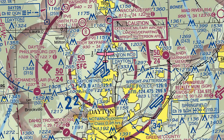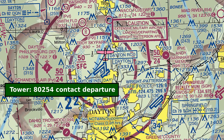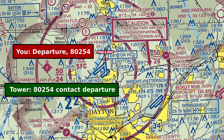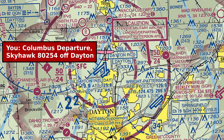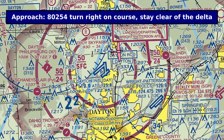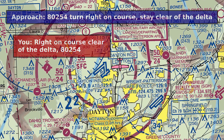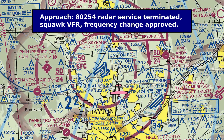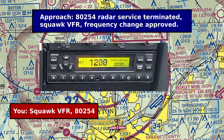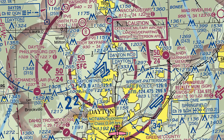On the way back out, the tower is going to say contact departure. When that happens, you use the same frequency that you used to get in, unless the tower gave you a different frequency, and start your contact with 'departure Skyhawk 80254 off Dayton.' Columbus is then going to vector you out of the airspace, and will eventually let you go with 'Skyhawk 80254 radar service is terminated, Squawk VFR frequency change approved.' At this point, you put 1200 into your transponder and read back 'Squawk VFR 80254.' Now you are no longer in contact with air traffic control.